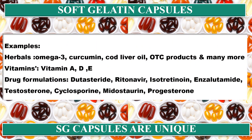Examples of soft gelatin capsule products include herbals, omega-3, curcumin, cod liver oil, OTC products, and many more available in the market. Vitamins are also very commonly available in soft gelatin capsules — mainly fat-soluble vitamins solubilized in oil and filled into capsules. Vitamin A, D, E, and K are the main examples.